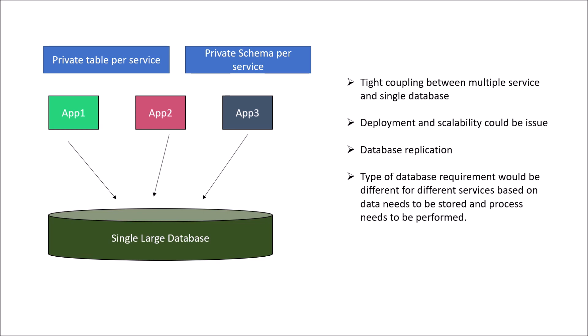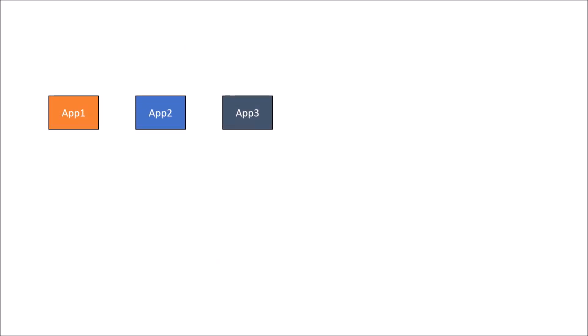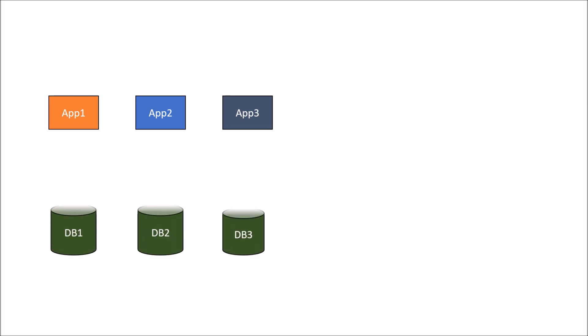Instead of this single large database, let's modify the architecture to use small databases that are private to each microservice. So again, we have the same microservices - application 1, application 2, and application 3 - and instead of a single large database, we have independent databases: DB1, DB2, and DB3, each dedicated to one microservice. DB1 is dedicated to application 1, DB2 to application 2, and DB3 to application 3.